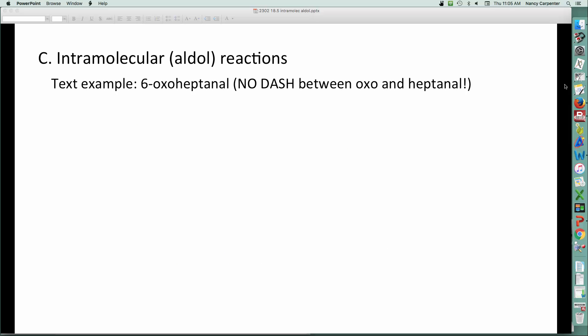So the example in the textbook is six-oxo-heptanil, and the only reason I bring that up is because there's an error in your textbook. I don't know why, but they have a dash between the oxo and the heptanil, and that shouldn't be there. So you can just cross that out in your book. The example we're going through is this guy here, pretty complicated-looking. We can see there's ketones and aldehydes, and that means there's the potential for enolates. So we have all the makings for an intramolecular reaction.